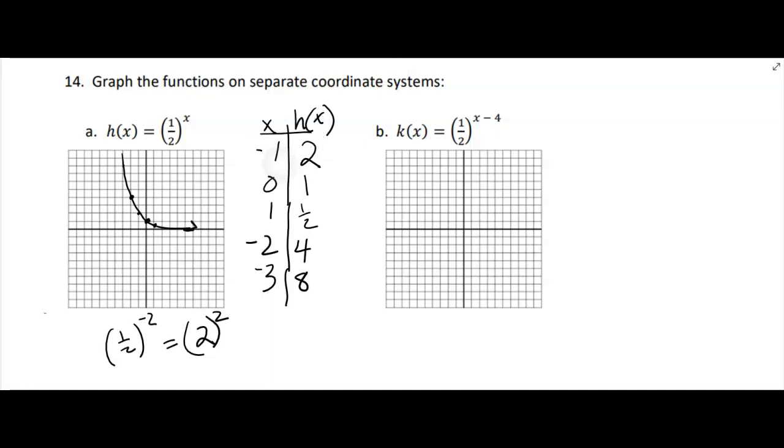So this is an example of an exponential curve where the base is between 0 and 1. Now think about what you know about transformations. What does that minus 4 do? It's going to move everything 4 to the right. So I'm going to just pick up all those points and move them over 1, 2, 3, 4 and so it's going to look like that.